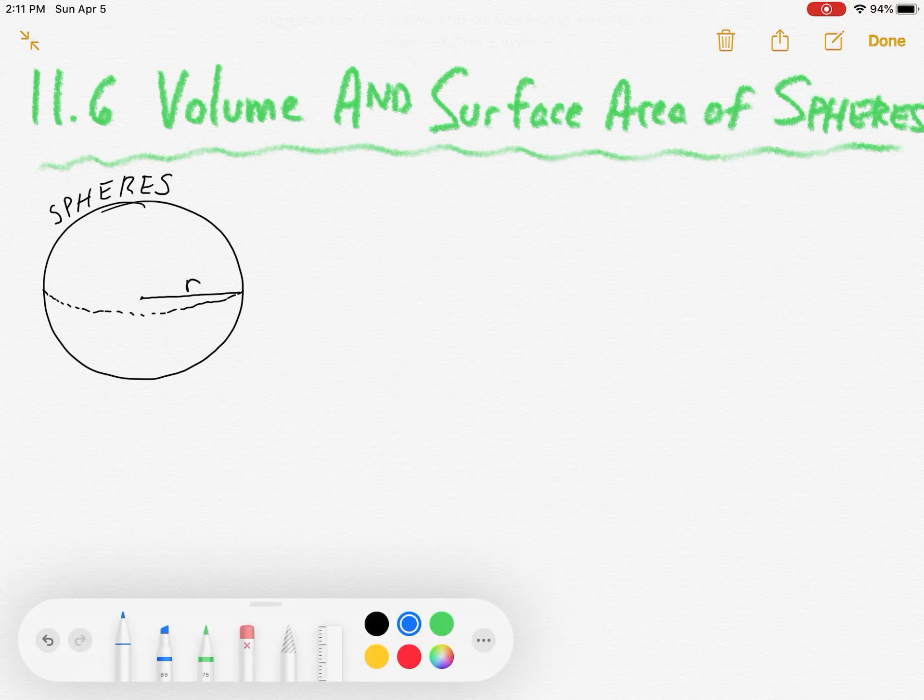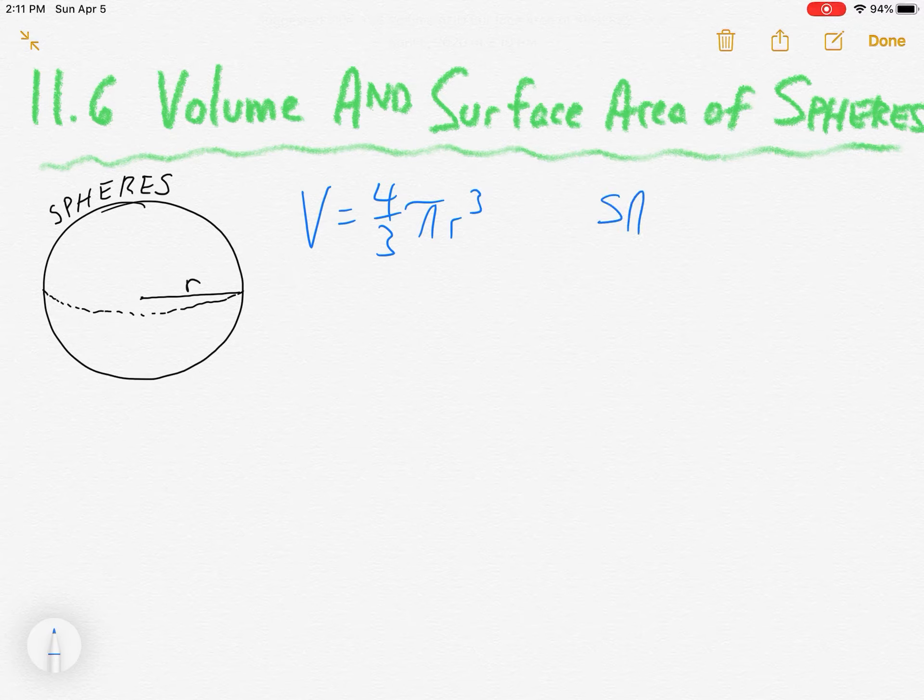Volume and surface area. The volume of a sphere is 4 thirds pi r cubed. Surface area of a sphere is 4 pi r squared.